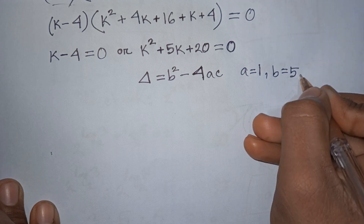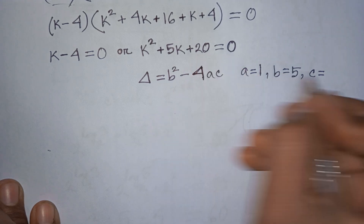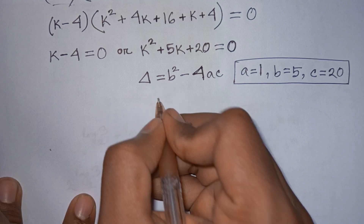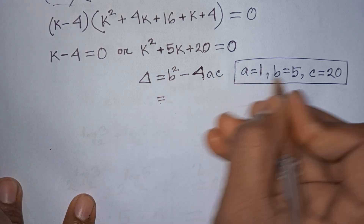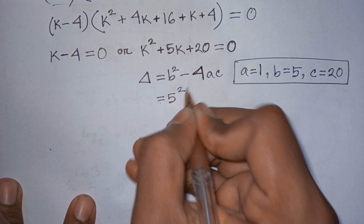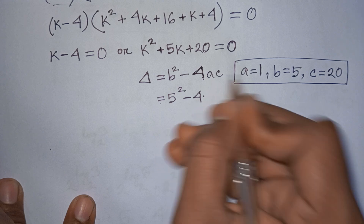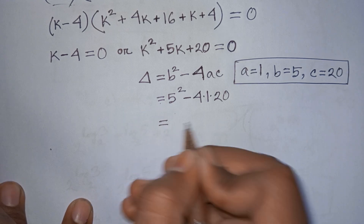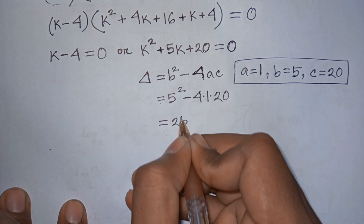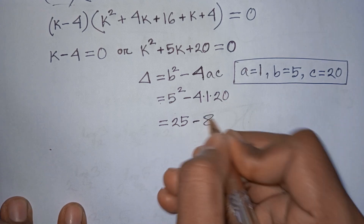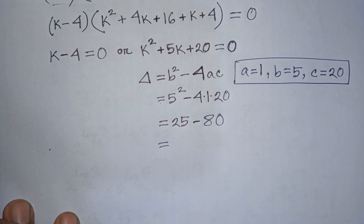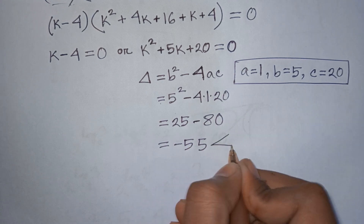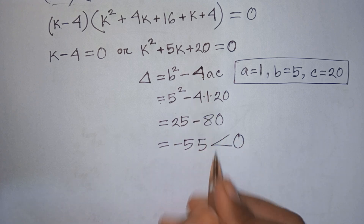Here, delta equals b squared, that means 5 squared, minus 4 times a, that means 1, times c, that means 20. This equals 25 minus 80, which equals minus 55. Since minus 55 is less than 0, this quadratic part has no real solution.